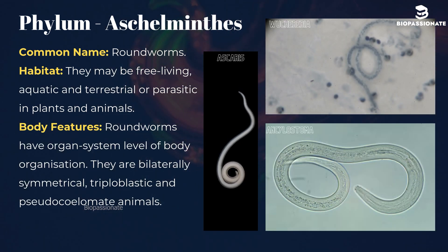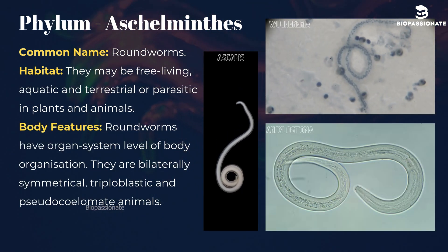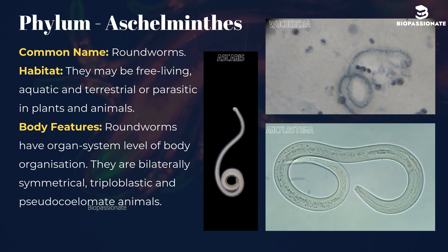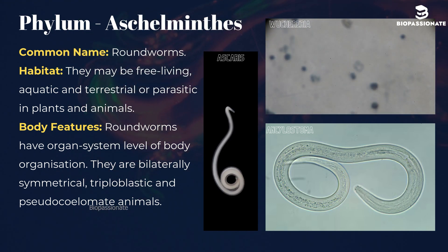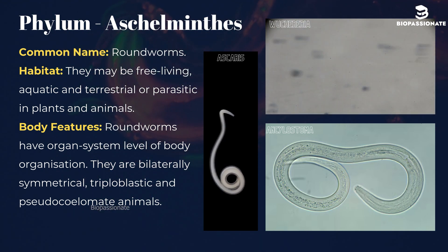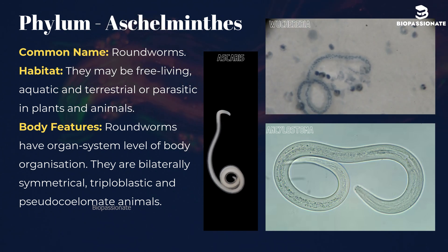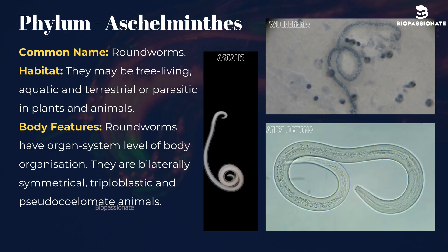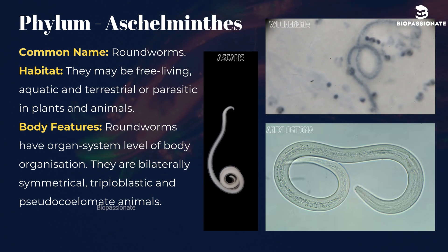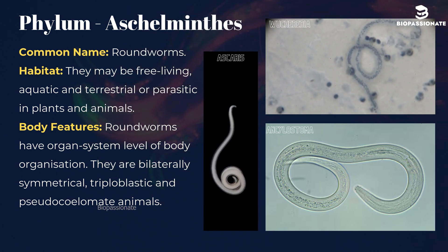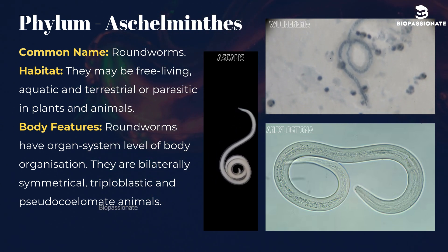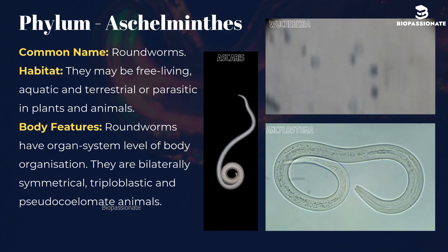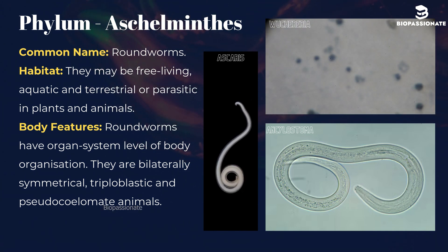Phylum Aschelminthes, commonly known as roundworms. They may be free-living, aquatic and terrestrial, or parasitic in plants and animals. Roundworms have organ system level of body organization. They are bilaterally symmetrical, triploblastic, and pseudocoelomate animals. Common examples are Ascaris (roundworm), Wuchereria (filaria worm), and Ancylostoma (hookworm).